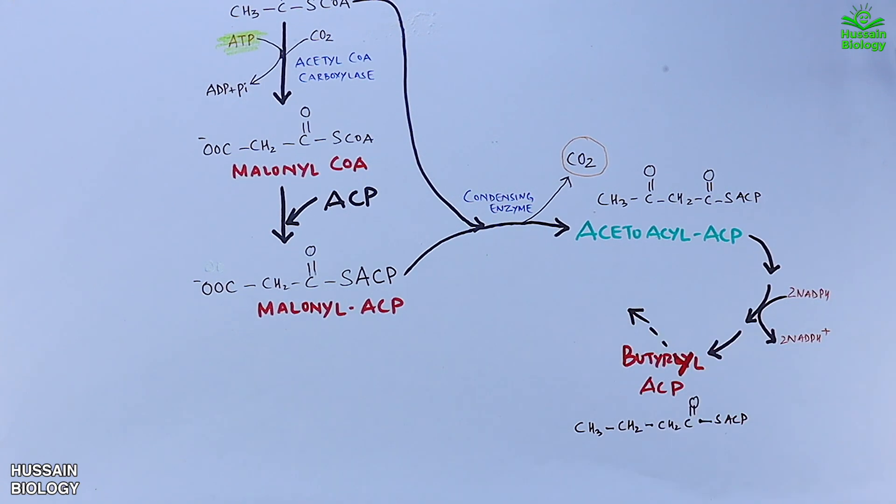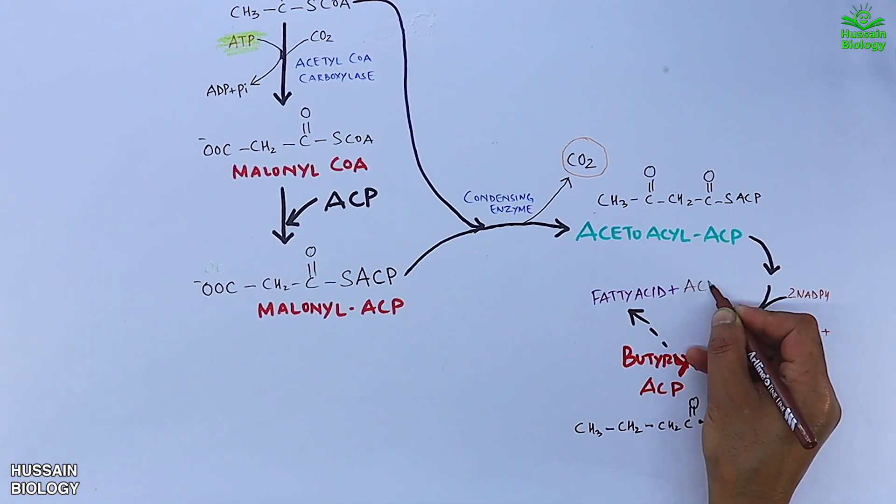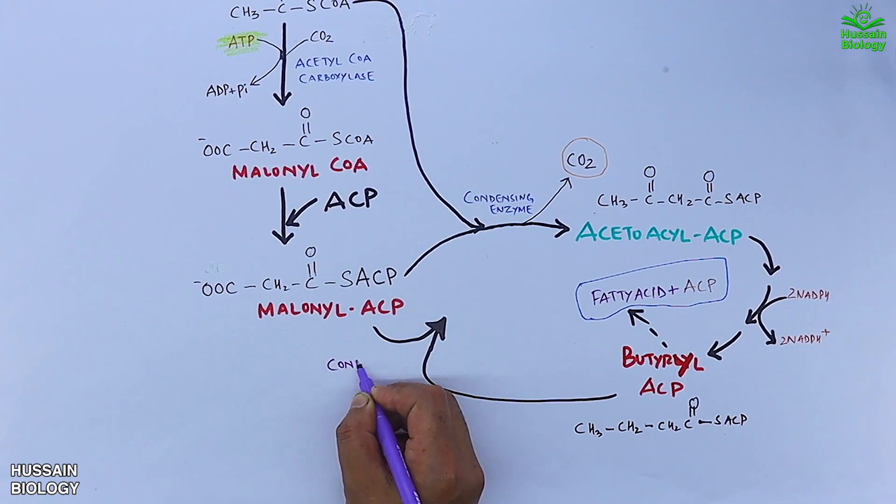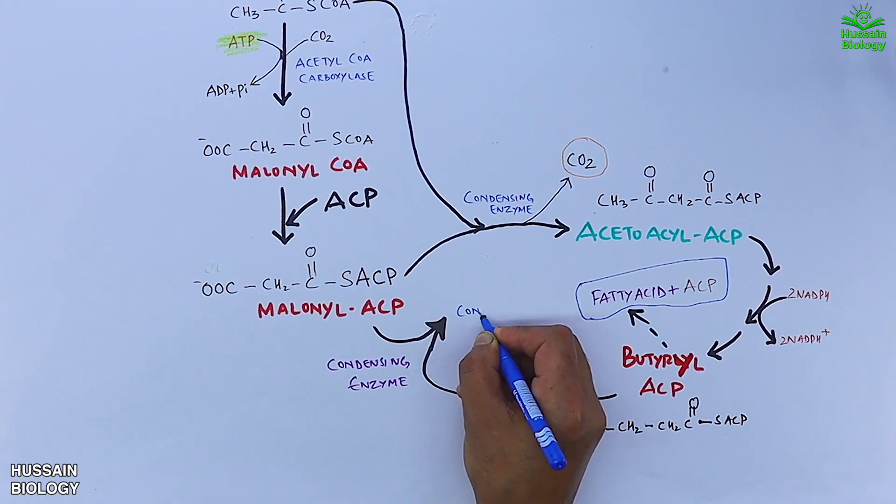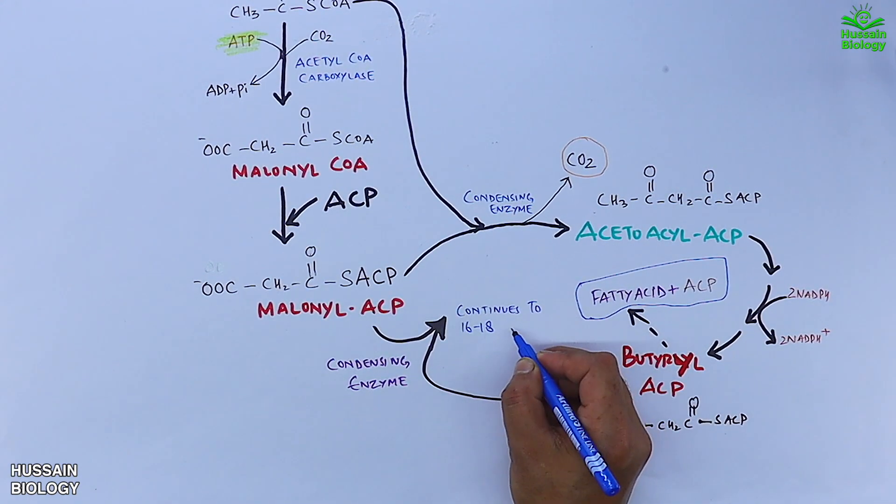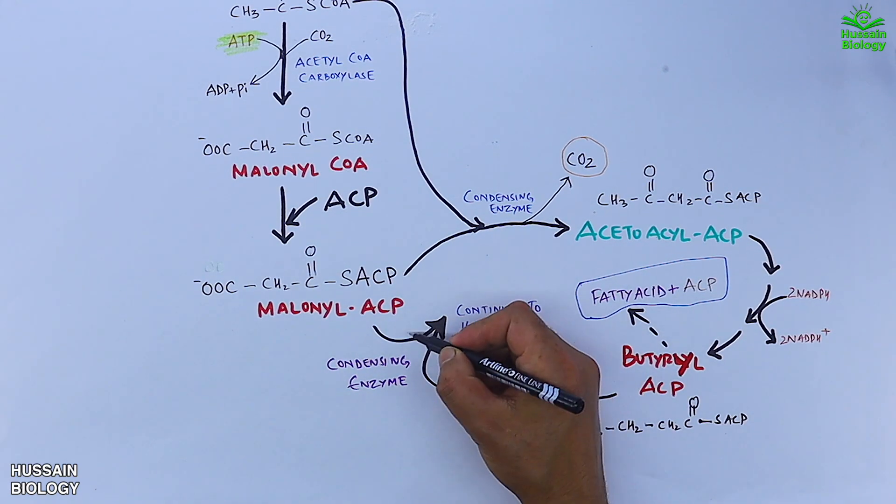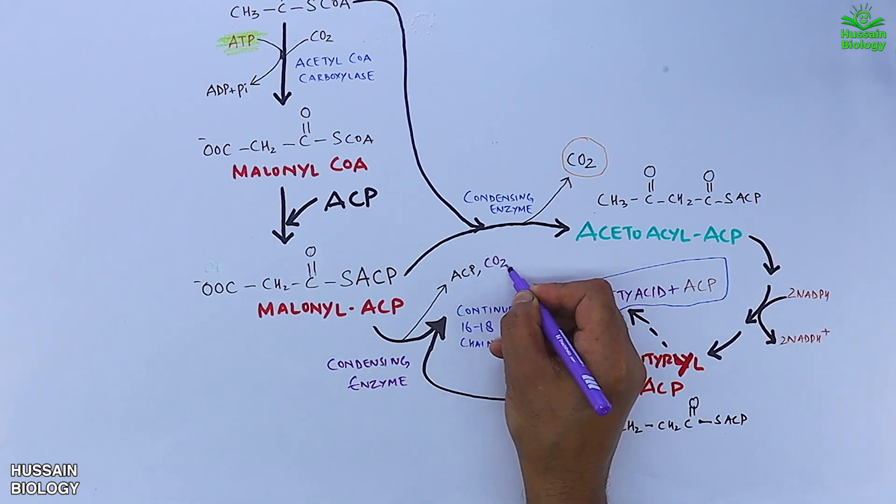However, this can also continue to form long chain fatty acids. Butyryl ACP combines with malonyl ACP in the presence of condensing enzyme to get 16 to 18 carbon long chain fatty acids. These reactions continue to elongate the fatty acid chain.